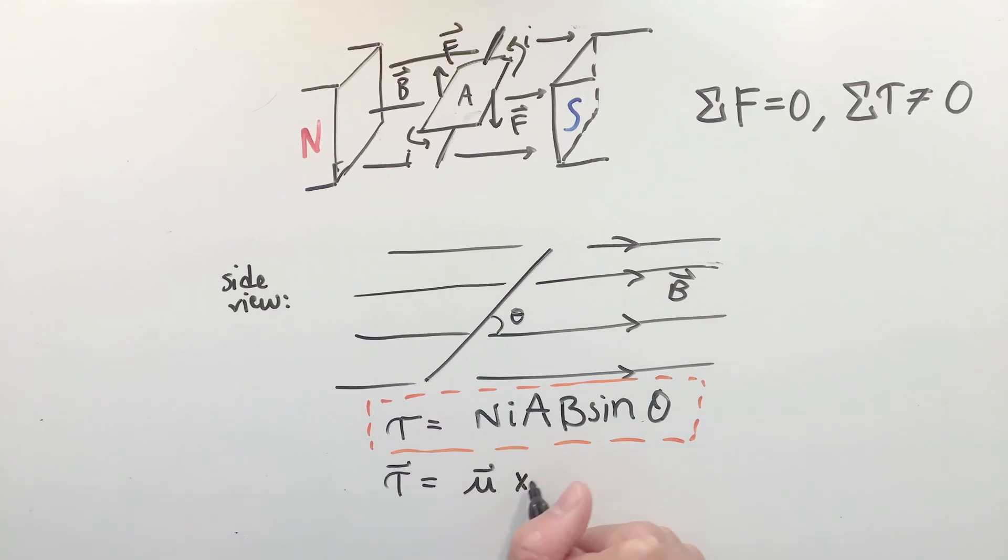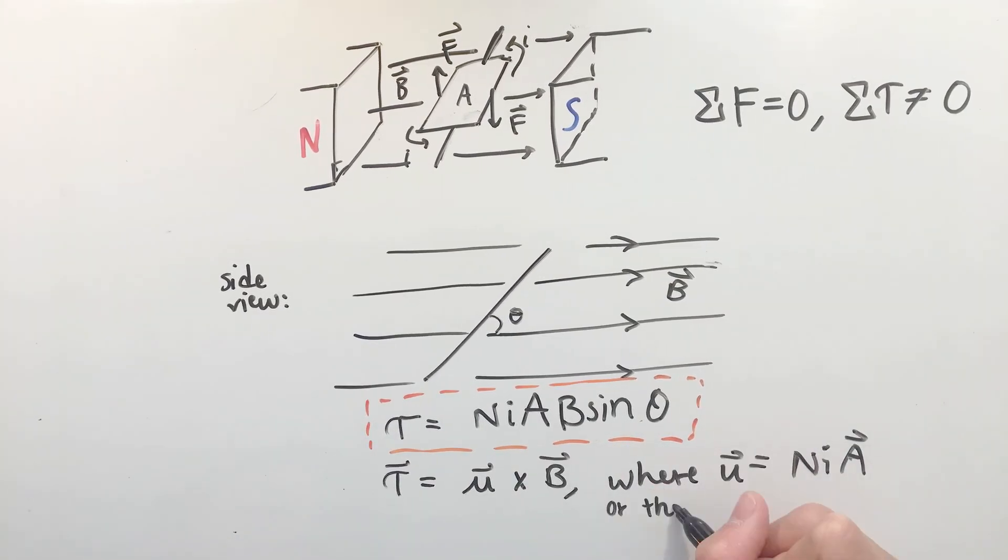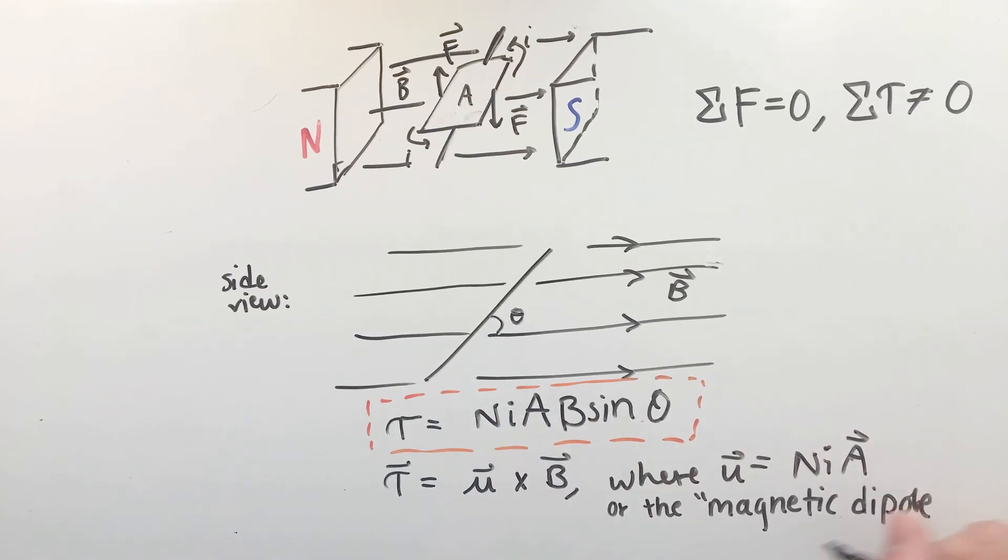This equation can actually be rewritten as a cross product between something known as a magnetic dipole moment, mu, and the magnetic field, and this is actually the basis for a simple DC motor.